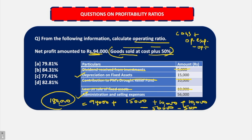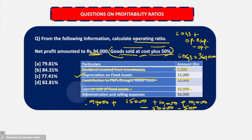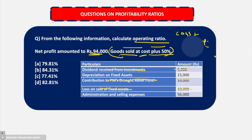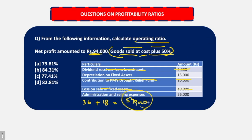The goods are sold at cost plus 50%, and we have found out that gross profit is 1,80,000. So 50% of the cost is equal to 1,80,000, which means the entire cost of goods sold comes out to be 3,60,000. Now using this, you can find out net sales of the enterprise. Net sales would be cost of goods sold plus the profits — 3,60,000 plus 1,80,000, which gives us 5,40,000.